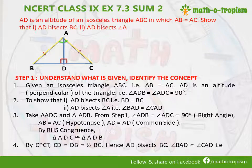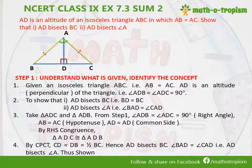Similarly, angle BAD will be equal to angle CAD, so it means both angles are equal. Therefore, AD cuts angle A into two equal halves. That is why AD bisects angle A — thus shown.